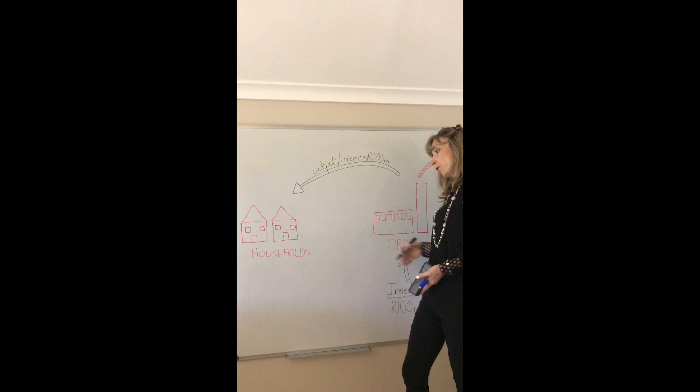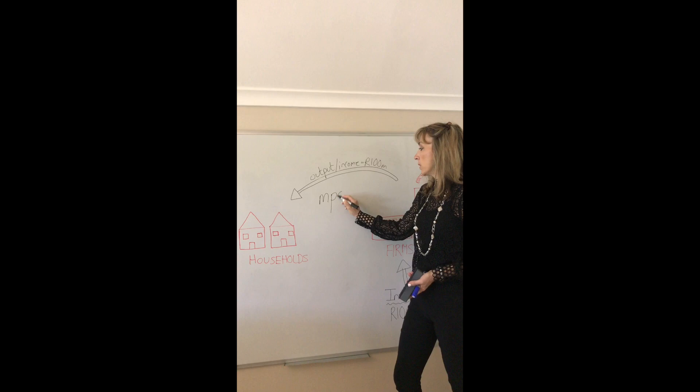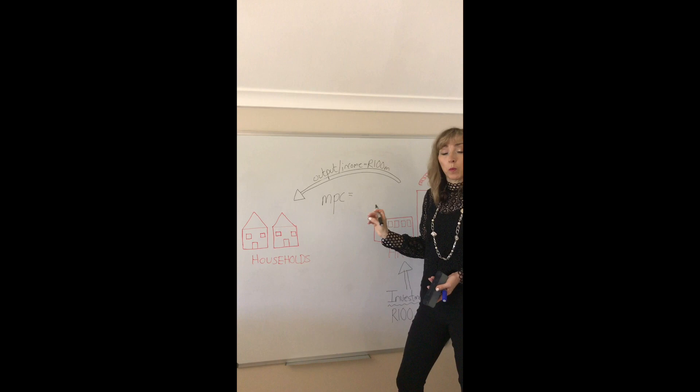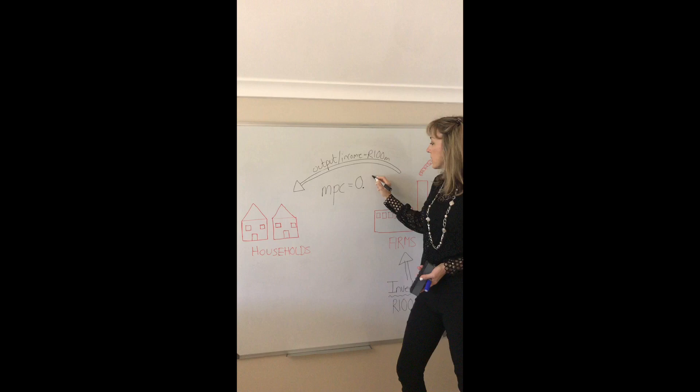Households use that income for expenditure purposes then. So what do they spend? Well let's determine by the marginal propensity to consume, the fraction of that income that will be spent on consumption expenditure. And let's take a different value now. Let's take 0.9.